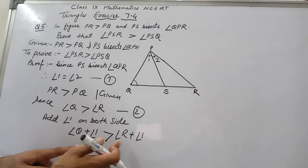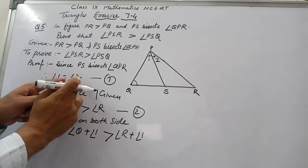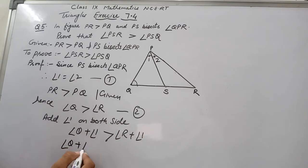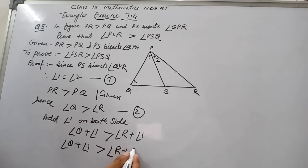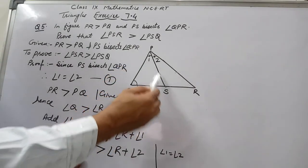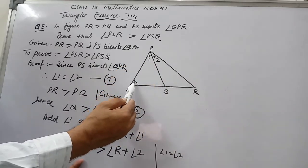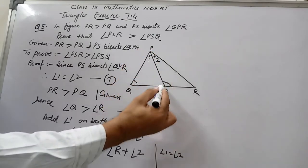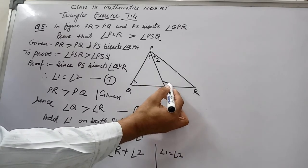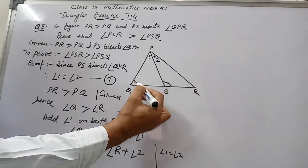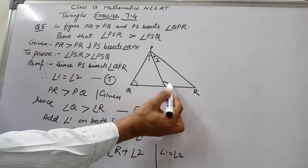Now I will replace angle 1 on the right side with angle 2, since angle 1 equals angle 2. So I write: angle Q plus angle 1 is greater than angle R plus angle 2. Now, angle Q plus angle 1 corresponds to the angles inside triangle PQS. In triangle PQS, angle PSR is the exterior angle, and the exterior angle equals the sum of the two non-adjacent interior angles. So angle Q plus angle 1 equals angle PSR.